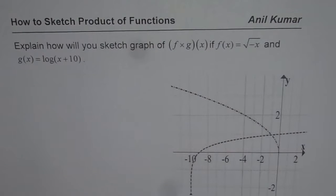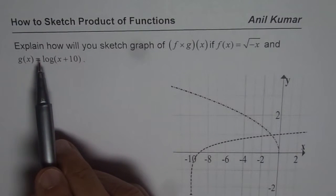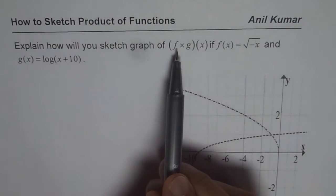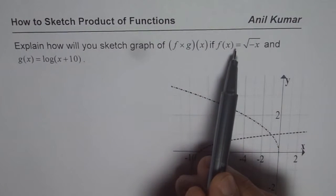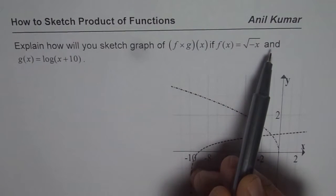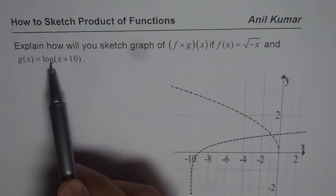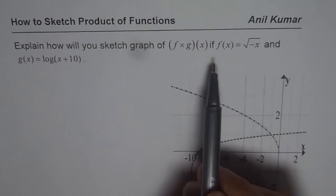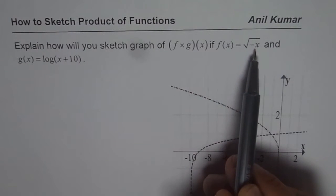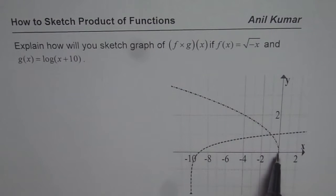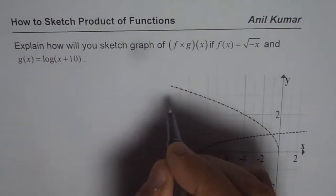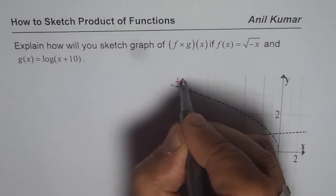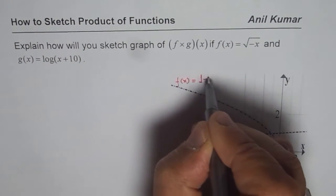I am Anil Kumar and in this video we will discuss different approaches which can be adopted to sketch the product of functions. The example before us is: explain how you will sketch the graph of the product of f and g, if f of x is equal to square root of minus x and g of x is equal to log of x plus 10. Square root of minus x means the square root function reflected on the y-axis, so that is the graph for square root of minus x.